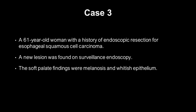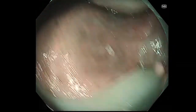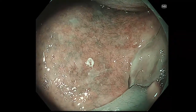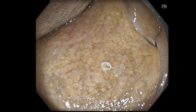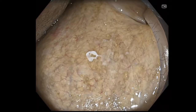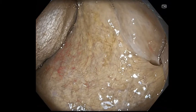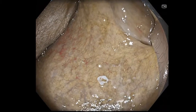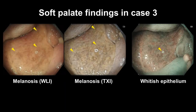The patient in case 3 was a 61-year-old woman with a history of endoscopic resection for esophageal squamous cell carcinoma. A new region was found on surveillance endoscopy. Narrowband imaging showed whitish epithelium. The color tone of melanosis became sharpened using the texture and color enhancement imaging mode. These are the observed findings in case 3.